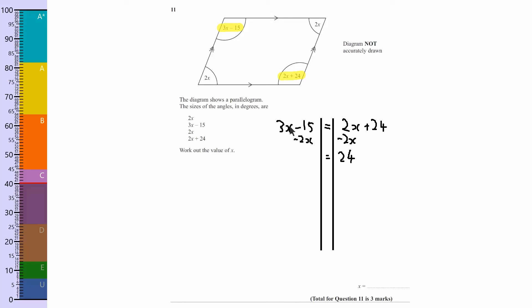Here, we've got 3x minus 15, take away 2x. Looking at this, 3x take away 2x just leaves us x, but that minus 15 hasn't gone away. We've still got to write that down.